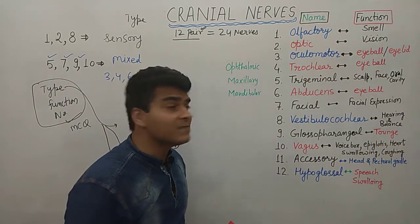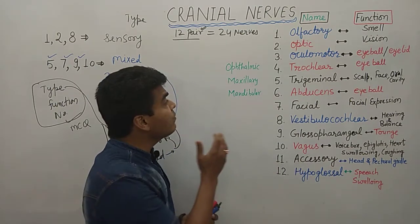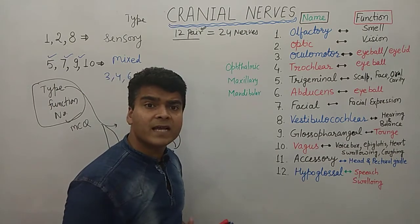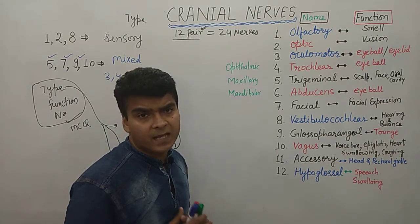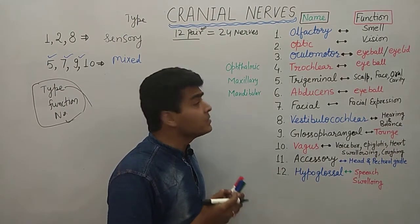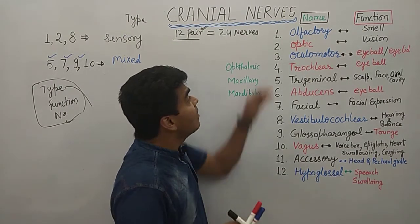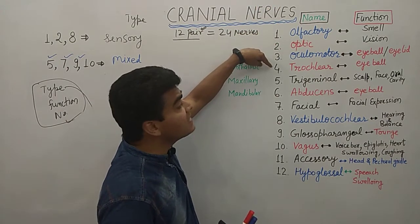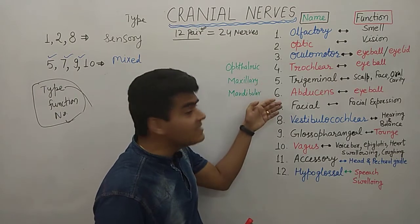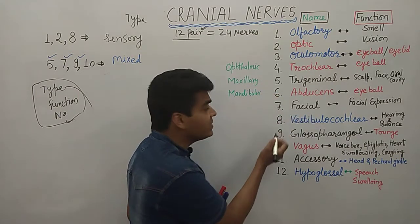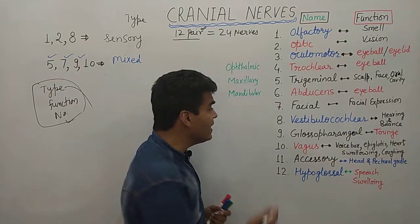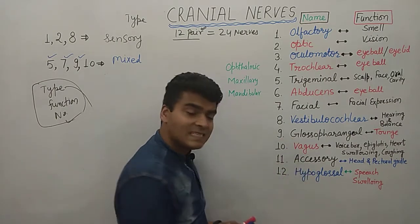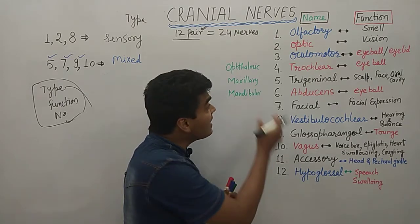Now moving on to the names of the cranial nerves and their functions. I will show you an easy diagram through which you will remember all the names and functions. The 12 cranial nerves are: 1st Olfactory, 2nd Optic, 3rd Oculomotor, 4th Trochlear, 5th Trigeminal, 6th Abducens, 7th Facial, 8th Vestibulocochlear, 9th Glossopharyngeal, 10th Vagus, 11th Accessory, and 12th Hypoglossal.